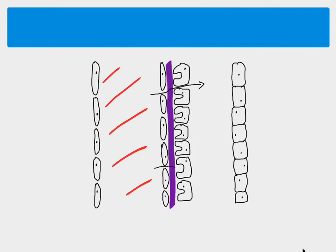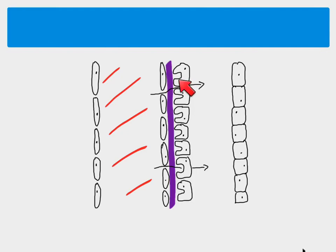Substances move across from the blood in the capillary, through the wall of the capillary, across the basement membrane, and then through the podocyte cells into the filtrate. Having these podocytes makes it easier for substances to be filtered. Once substances have moved across into the lumen of the Bowman's capsule, we have our filtrate.